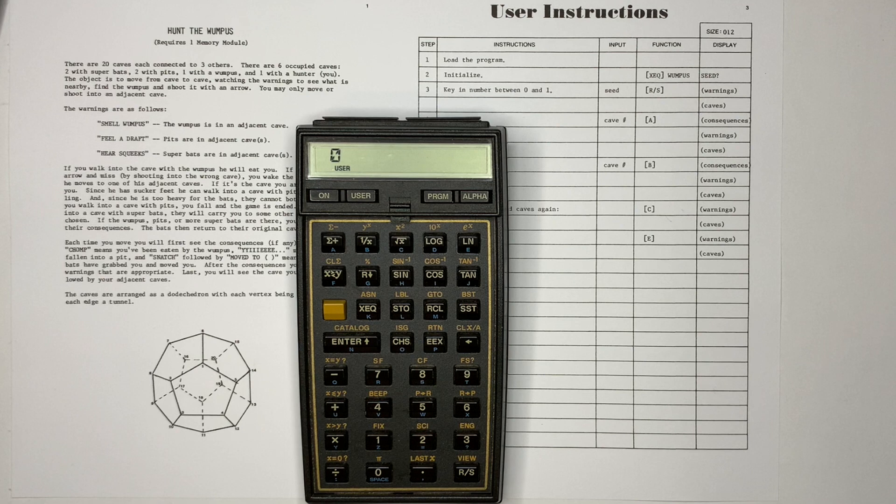Hunt the Wampus is a text-based adventure game developed by Gregory Yob in 1973. You, the hunter, move through a dodecahedron cave system, hunting the wampus while trying to avoid pits and super bats.